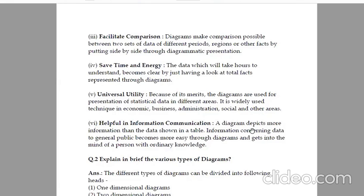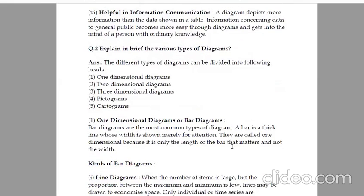A diagram depicts more information than the data shown in a table. Information concerning data to general public becomes more easy through diagrams and gets into the mind of a person with ordinary knowledge. Explain in brief the various types of diagrams. The different types of diagrams can be divided into following heads: one-dimensional diagrams, two-dimensional diagrams, three-dimensional diagrams, pictograms and cartograms.